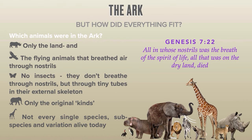Looking at Genesis 7:22 more closely, God did not tell Noah to take one pair of every kind of animal in existence, but only the land animals and flying animals that breathed air through nostrils — "all in whose nostrils was the breath of the spirit of life." This would exclude insects, because they don't breathe through nostrils. Insects breathe through tiny tubes in their external skeleton. Furthermore, only the original kinds were taken into the ark, not every single species, subspecies and variation alive today.